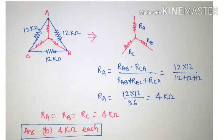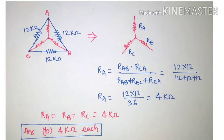Ra equals Rab into Rca divided by (Rab + Rbc + Rca), which equals 12 into 12 divided by (12 + 12 + 12). So Ra equals 12 into 12 divided by 36, which gives 4 kilo ohm. Therefore Ra equals Rb equals Rc equals 4 kilo ohm. Answer B, 4 kilo ohm, is the correct answer.